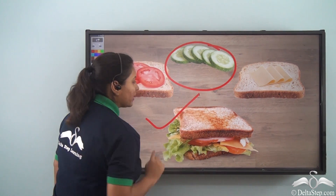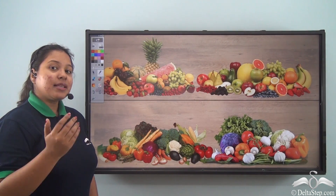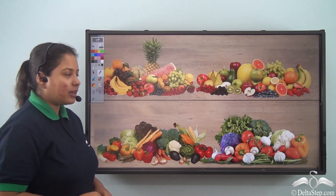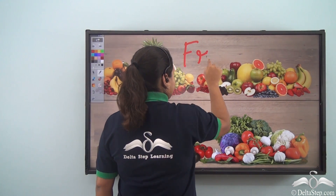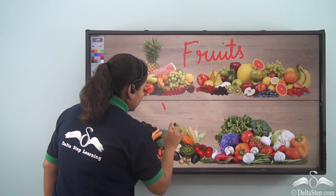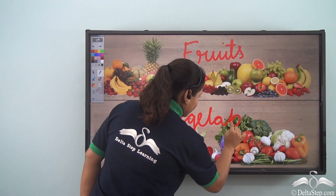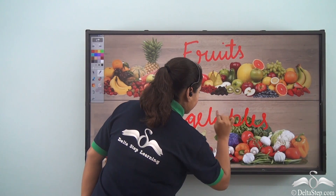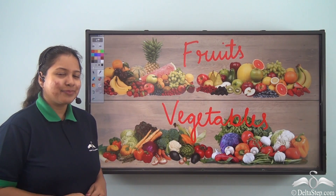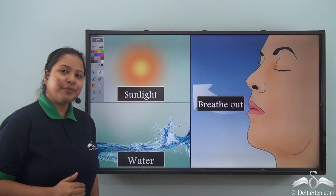Finally your sandwich is ready to eat, right? Similarly, there is another easy recipe, which is to make raw fruits and vegetables. But can you make raw fruits and vegetables? Not really. Only plants can make raw fruits and vegetables.